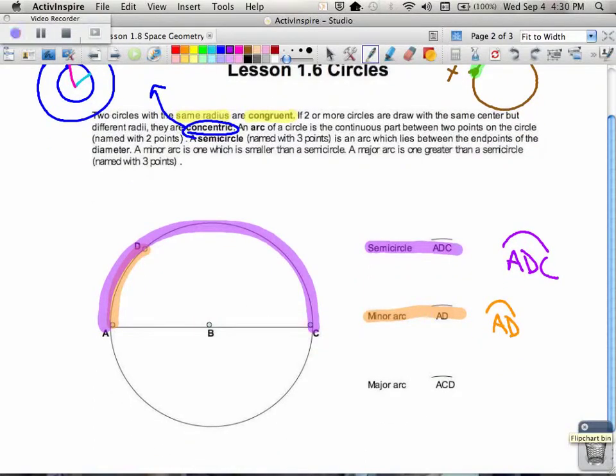So the semicircle, remember, has 180 degrees. The minor arc is something that's in between, so it's less than 180 degrees, but it's more than 90 degrees.